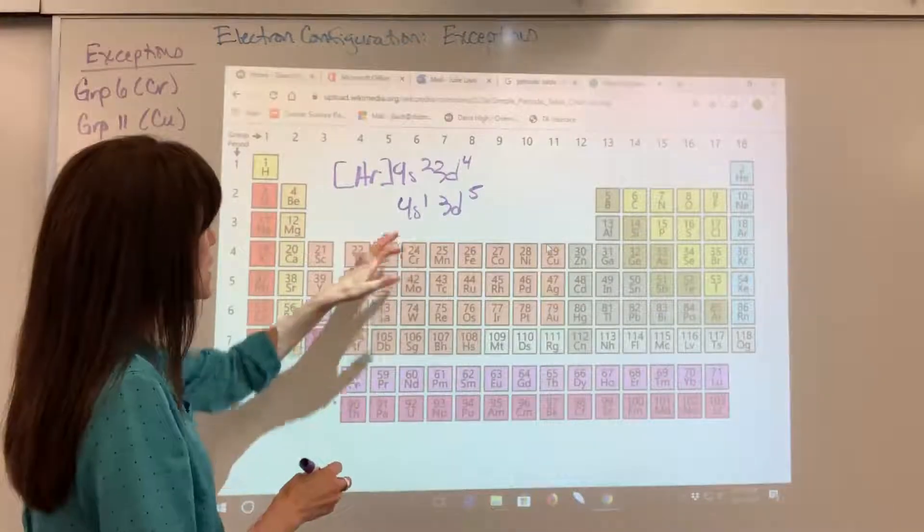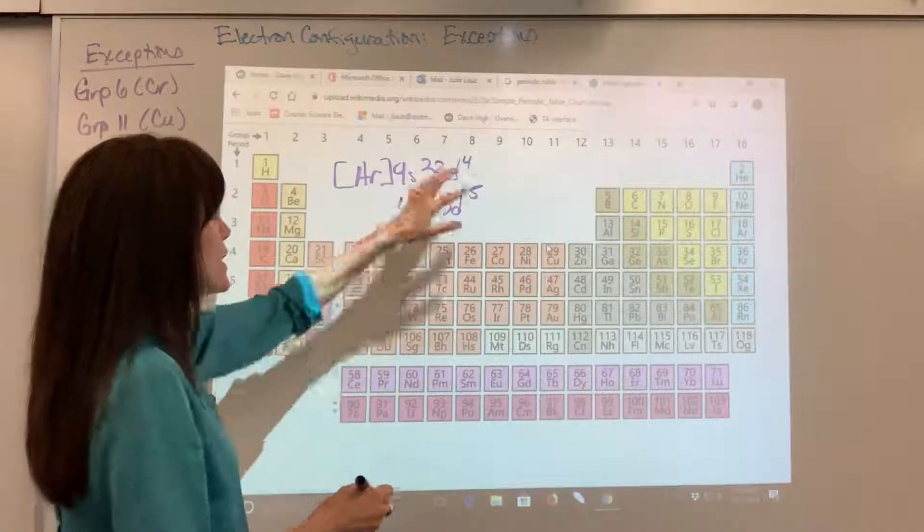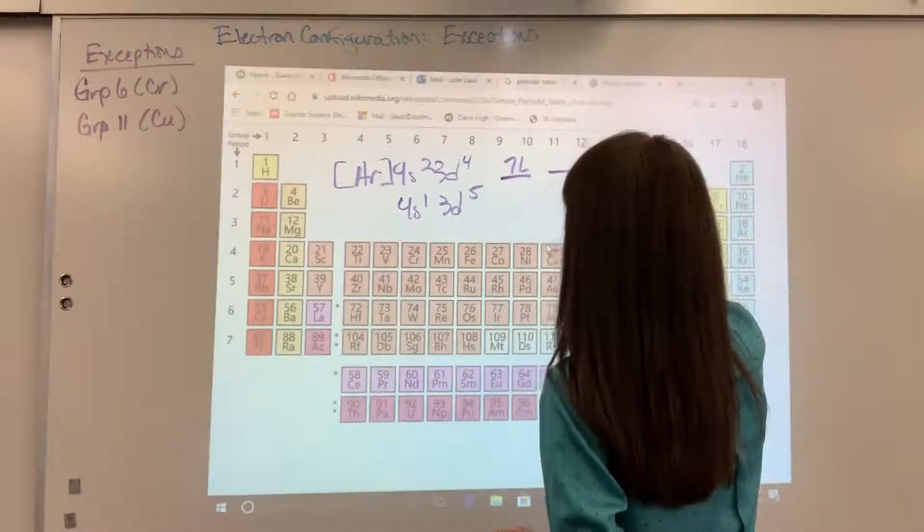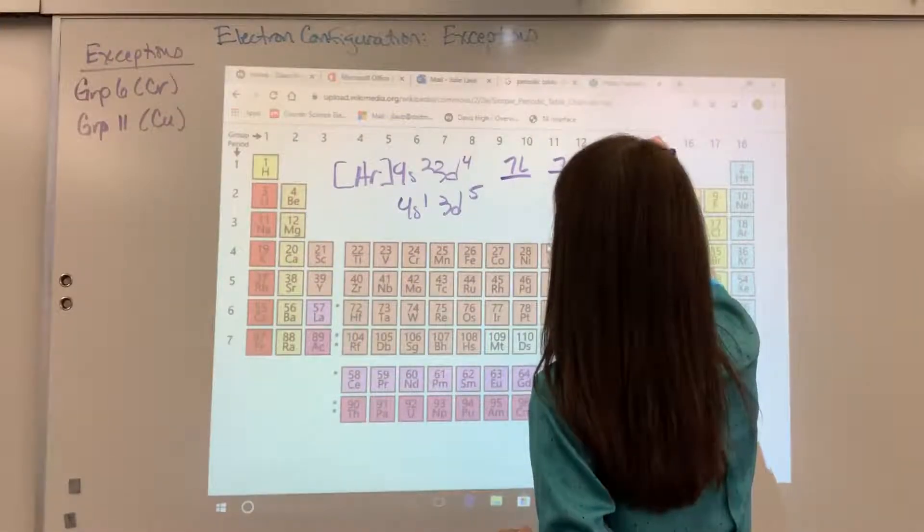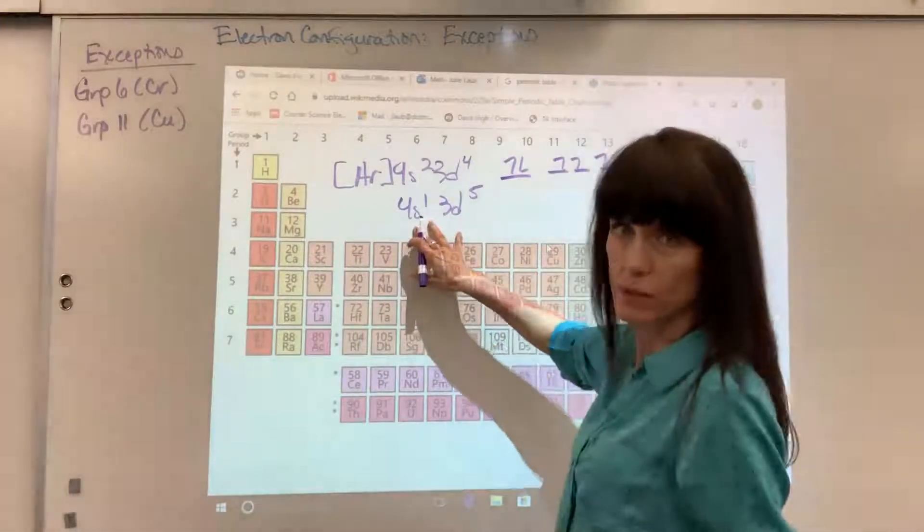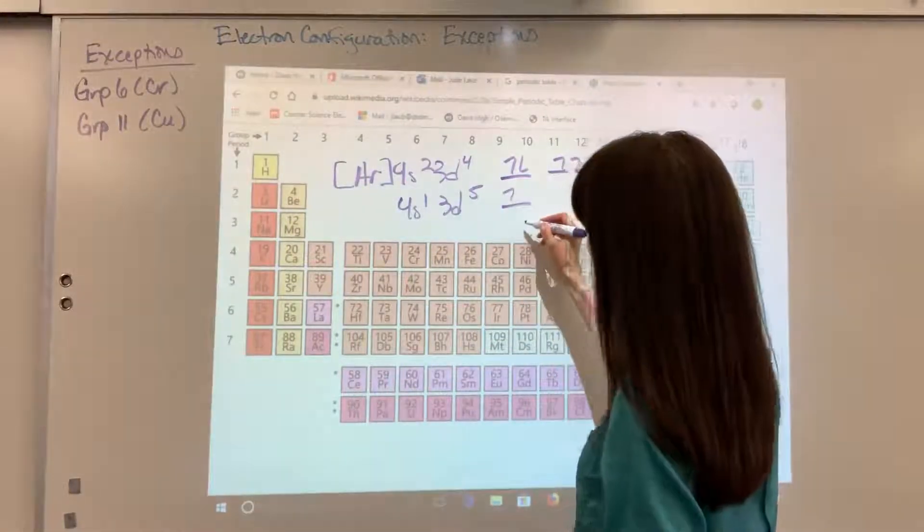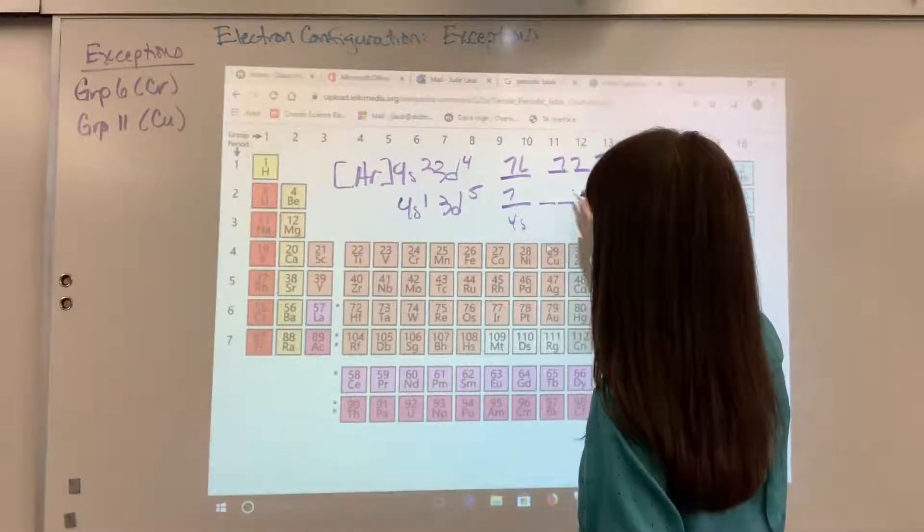If I do the orbital notation for each of these, you would have your 4S and then 3D, 1, 2, 3, 4. But if I do orbital notation on the exception, how it really exists in nature, you've got one electron in the 4S and 1, 2, 3, 4, 5.